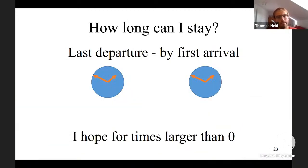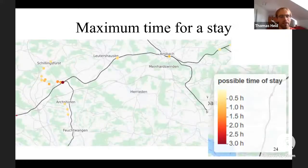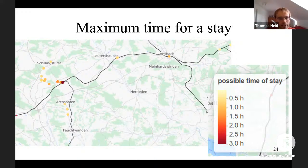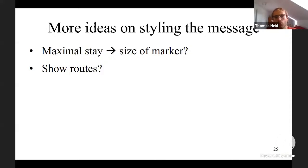Combining these two plots as 'last departure minus first arrival' gives the maximum stay time, which I hope is greater than zero. The very dark areas on the map mean you can stay very long. But going not too far from the starting point you have to return early. The visualization clearly shows possible outcomes and where the trains and buses run.